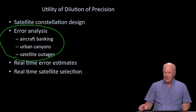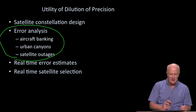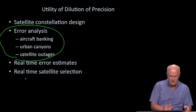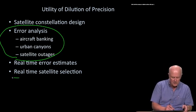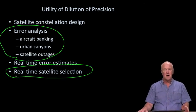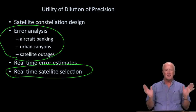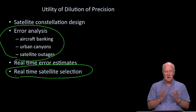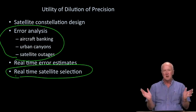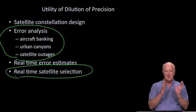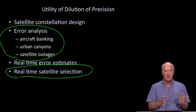And finally, certainly in satellite receivers early on, DOP was also used to select which satellites you should use. The receivers were not computationally capable of tracking all the satellites in view. So there was a down selection to let's pick the four best, the five best, whatever it was. And that down selection was controlled by DOP as well.